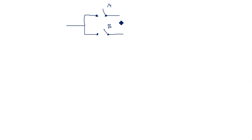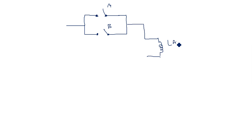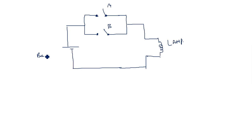Now let us examine the same OR operation for a two-input OR gate using switches. We have two switches A and B connected as parallel switches on either side, and a lamp is connected at the output. When the output is active, the lamp will glow. A battery supply is applied to this circuit.